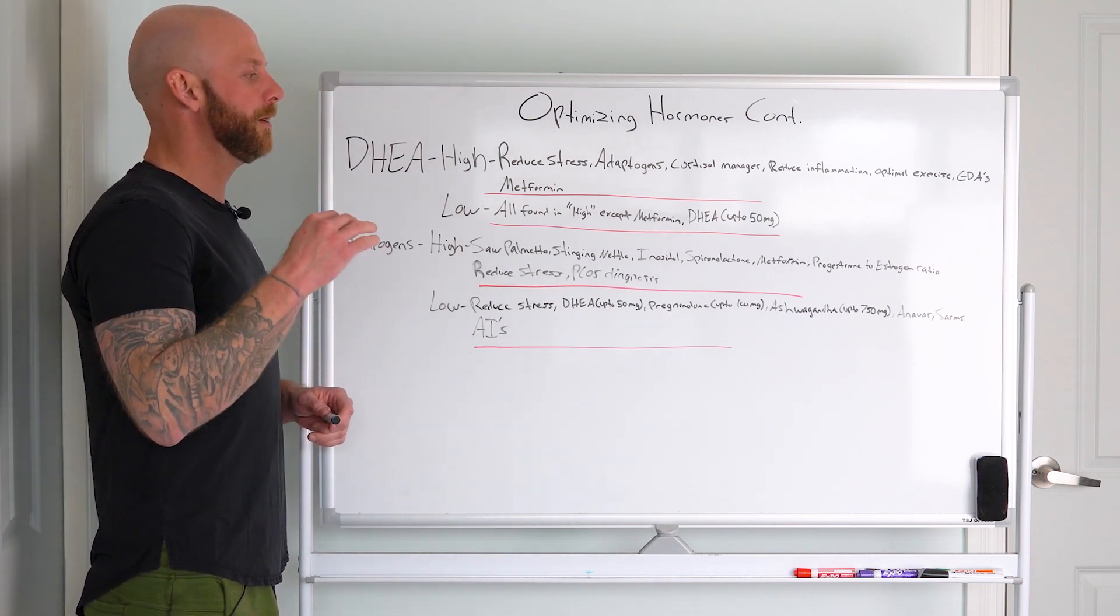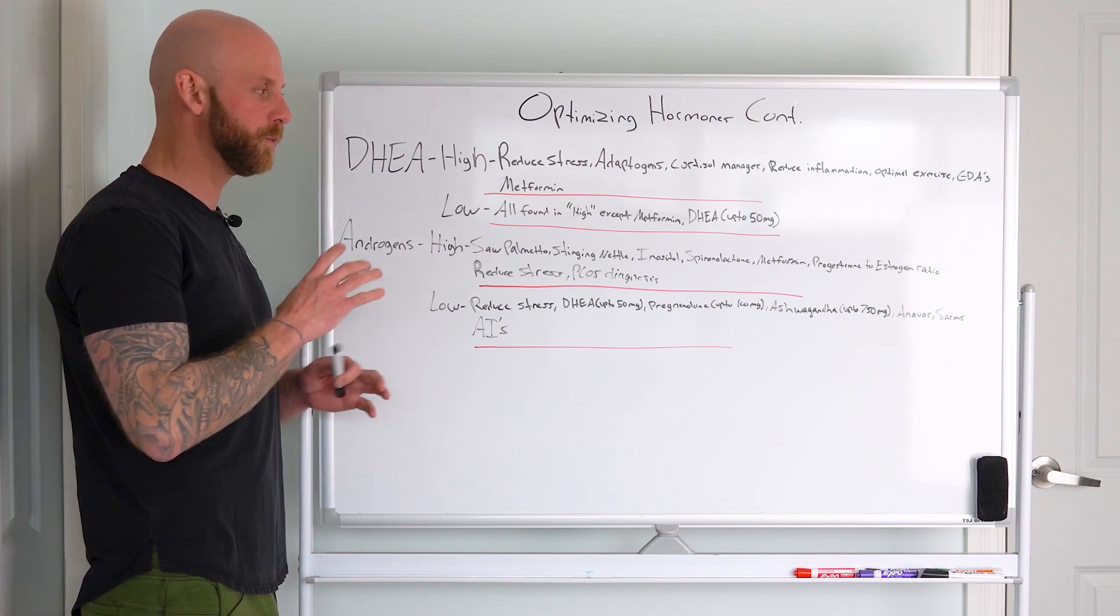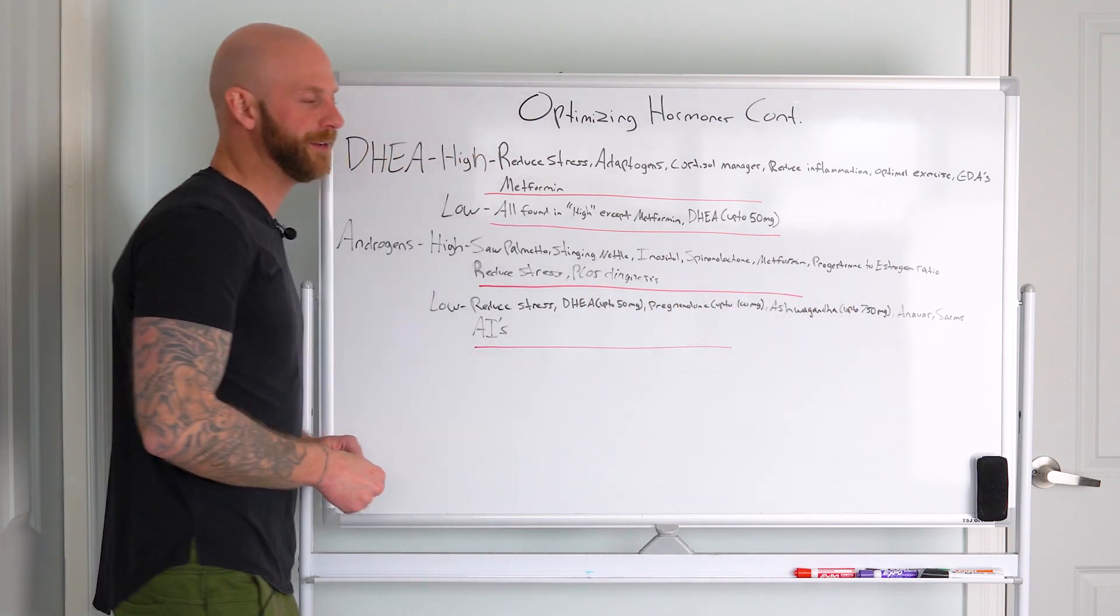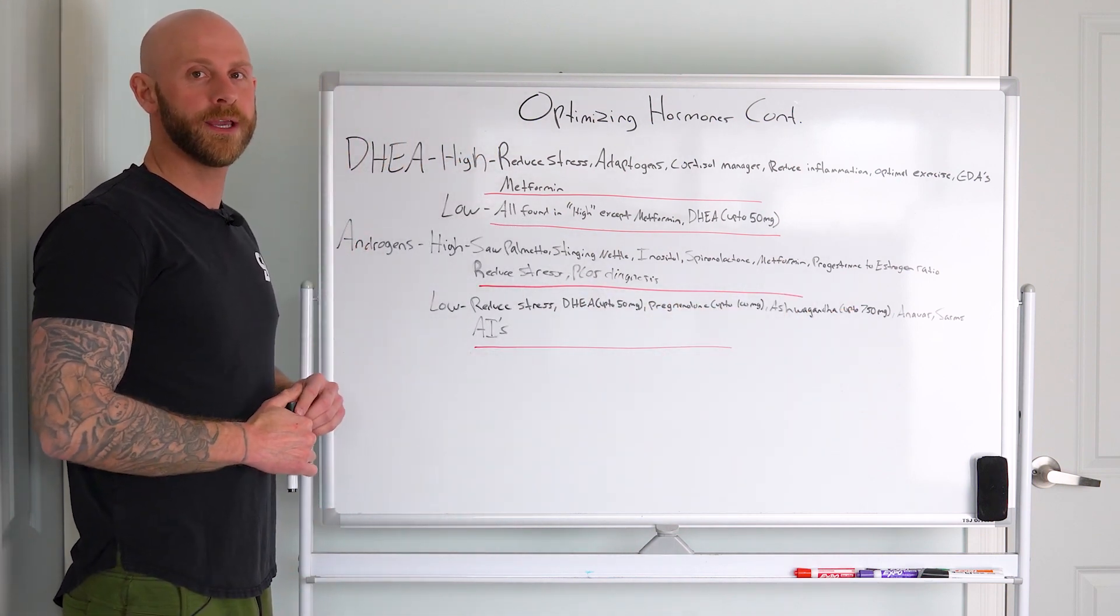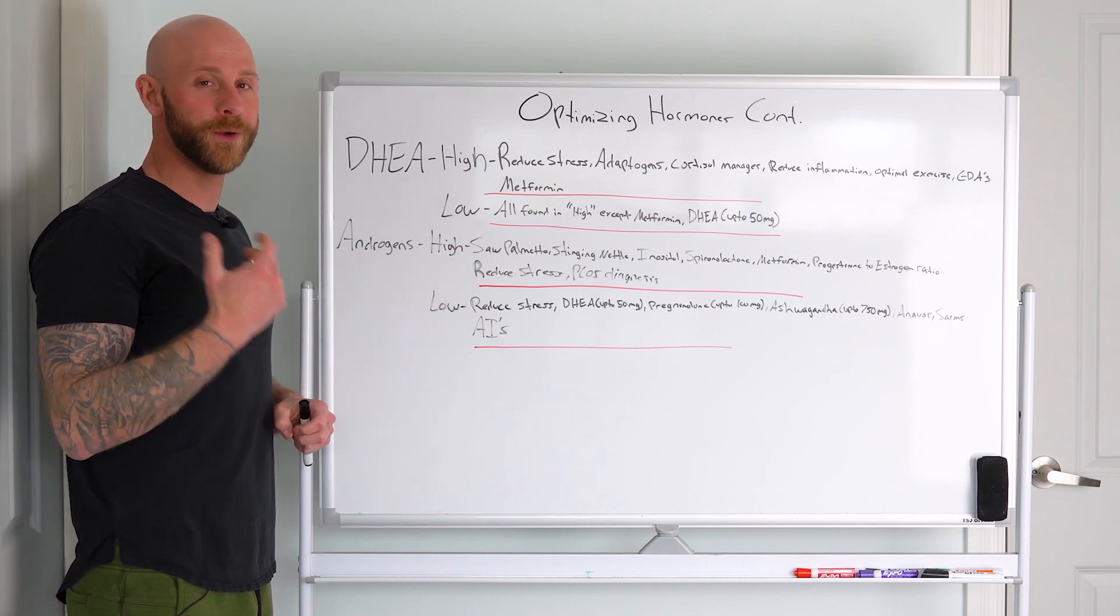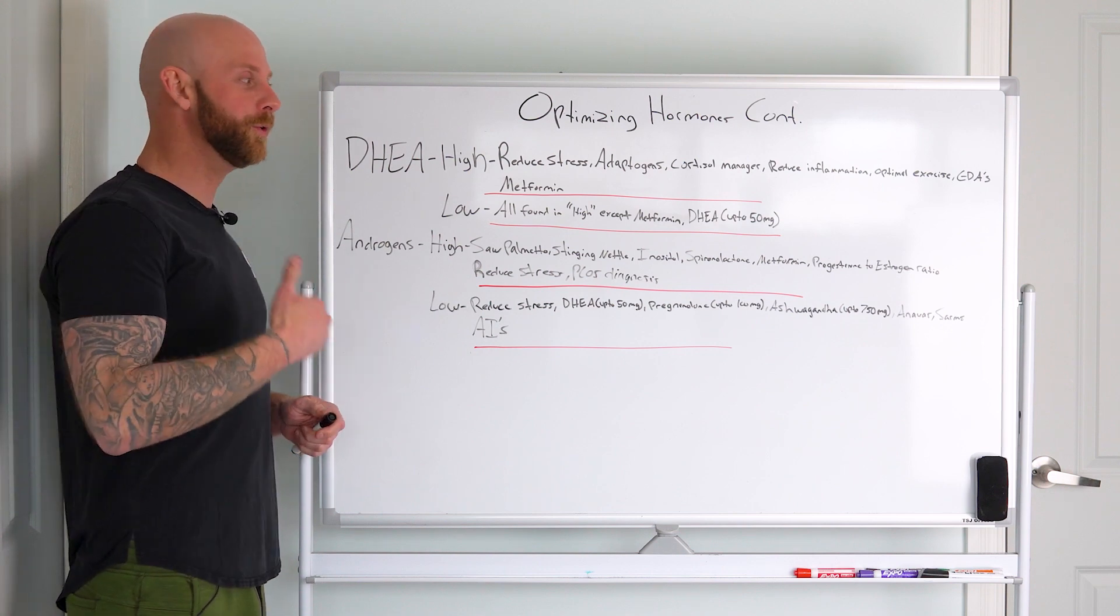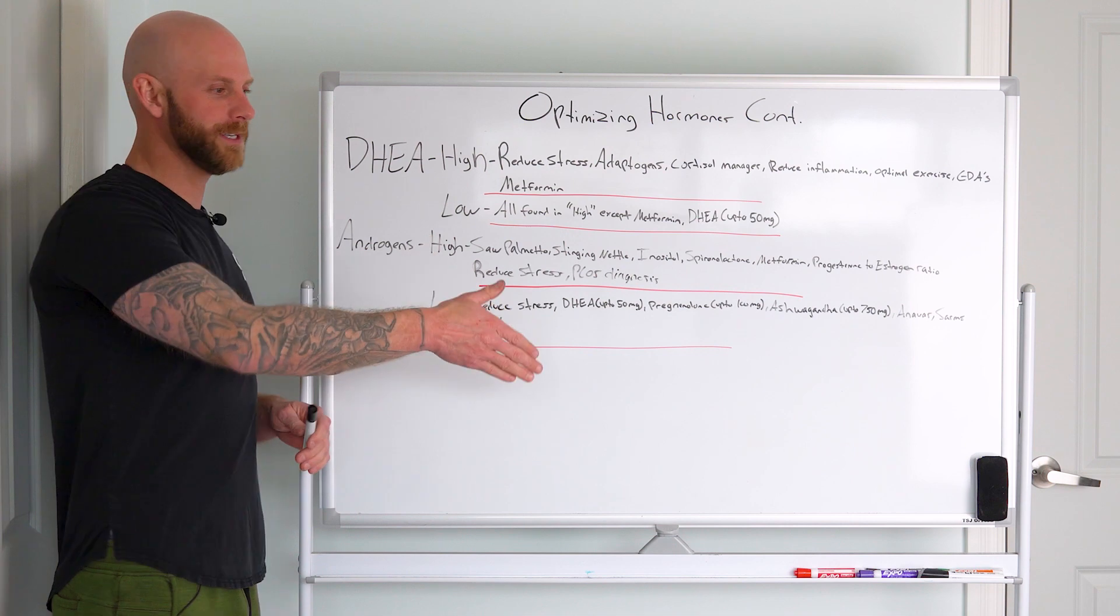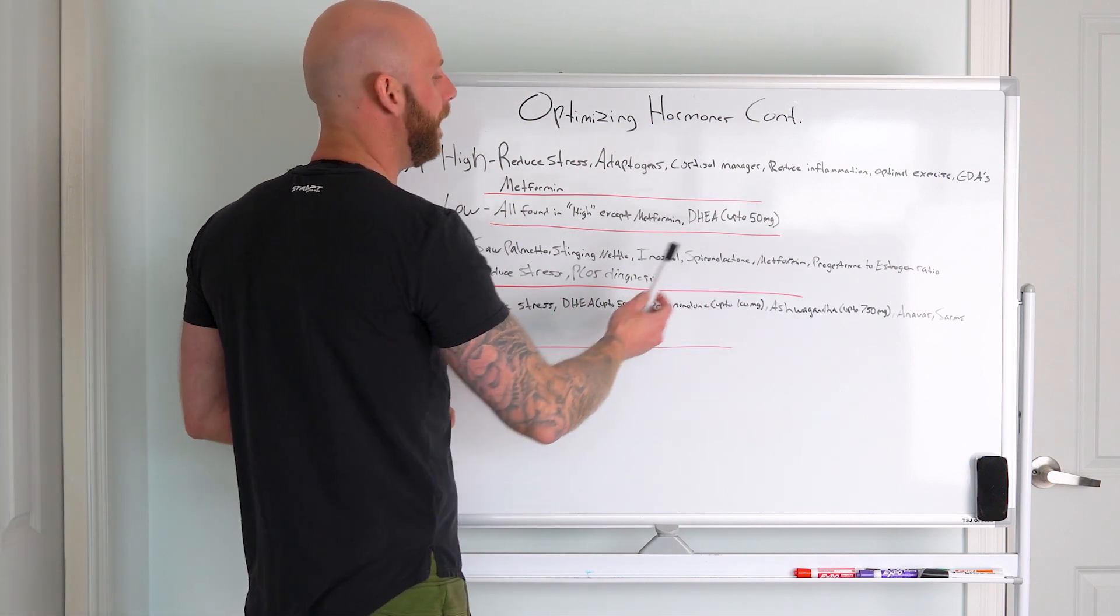I speak about ashwagandha and how it can lower cortisol levels. This is why they give the name adaptogens - at this dosage it could have a different effect, it can actually raise our androgens. This is why dosage is important. If you actually google something like ashwagandha dosage, it'll be all over the place. Higher dosages can really help with increasing androgens.